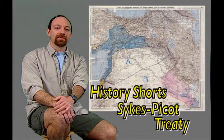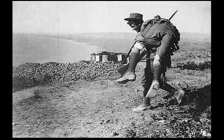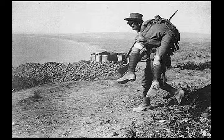In 1915, despite a failed attempt by British Empire troops to knock Turkey out of the war during the Gallipoli Campaign, British and French negotiators were planning the post-war dismemberment of the Ottoman Empire.